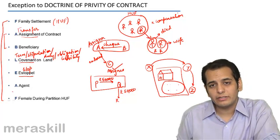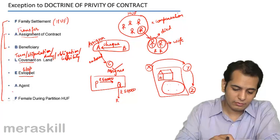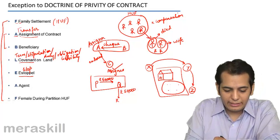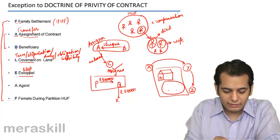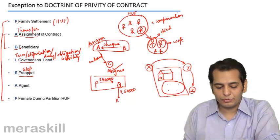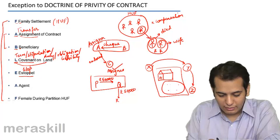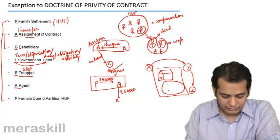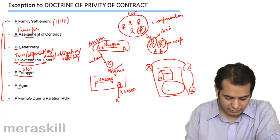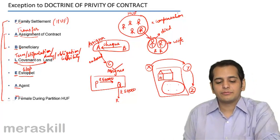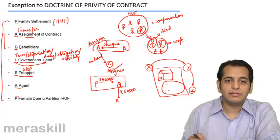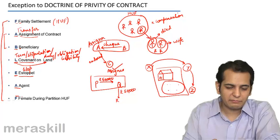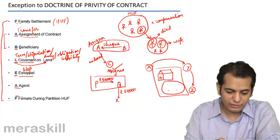We have taken F from the first point, A from the second, B from the third, L from the fourth, E from the fifth, A from the sixth, and finally F — to make it FAB LEAF. This helps you to remember: the first F is for family settlement, the second A is for assignment.